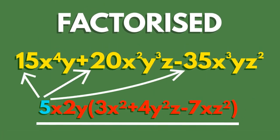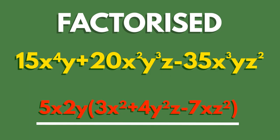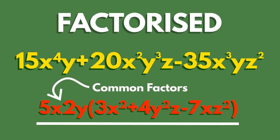5 is the biggest number that will divide into 15, 20 and 35. x squared y is the highest powers of x and y that will go into all three terms. z was not in all terms, so it can't come out as a common factor. The parts taken out and put at the front are the common factors. The parts inside the brackets are what's needed to get back to the original terms if you multiply the brackets out again.